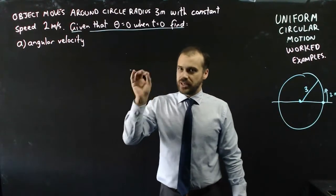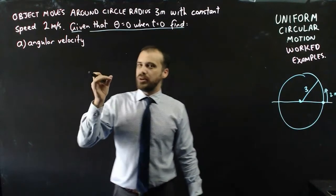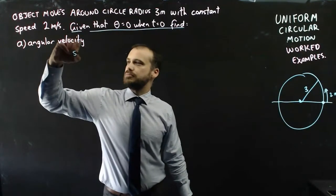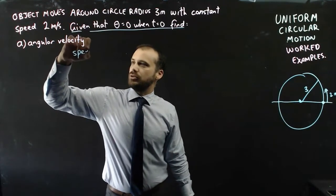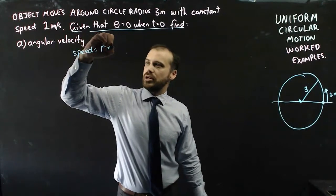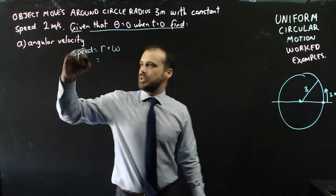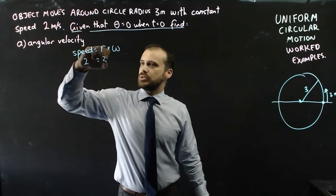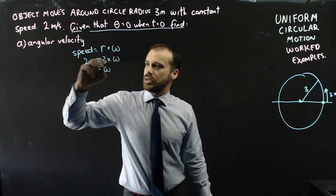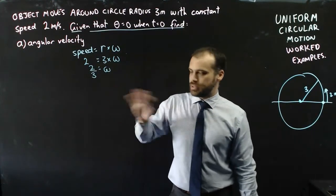First job is our angular velocity. We know that speed is equal to the radius times the angular velocity omega. So that gives us 2 equals 3 times omega, and omega is equal to 2 over 3. Step 1 done.